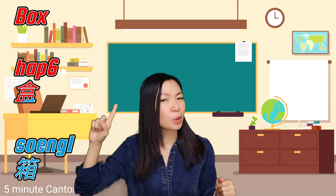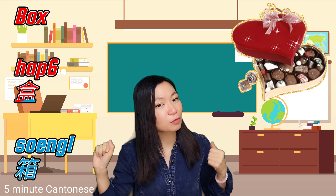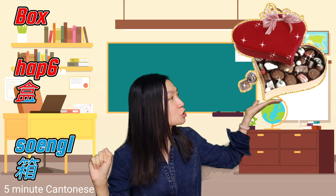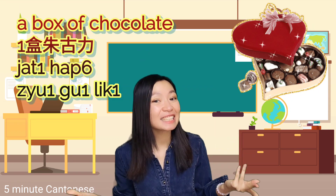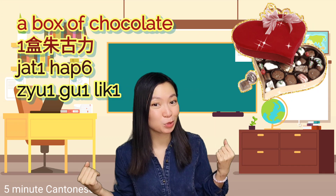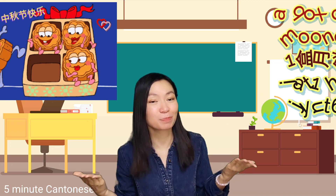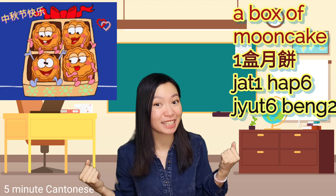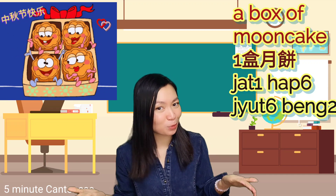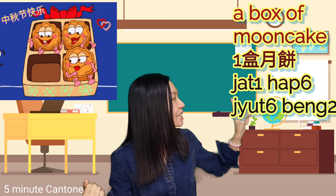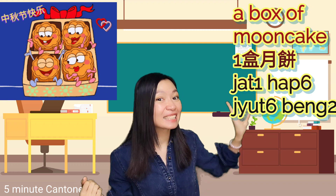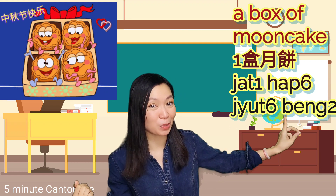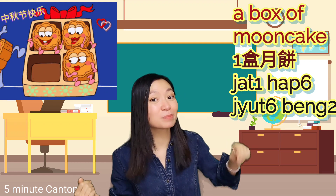Number 2 and 3. The first one: 盒. You already heard about it before. For example, chocolate again — a box of chocolate: 一盒朱古力. How about a box of mooncake? It's the same: 一盒月餅。